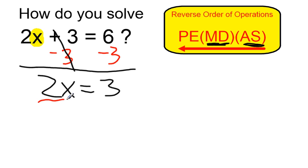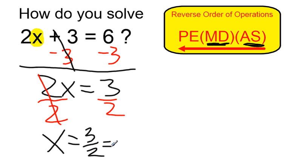2x means 2 times x. To undo a multiplication, I'm going to divide by 2. Therefore, x equals 3 over 2, which is equivalent to 1 and a half.